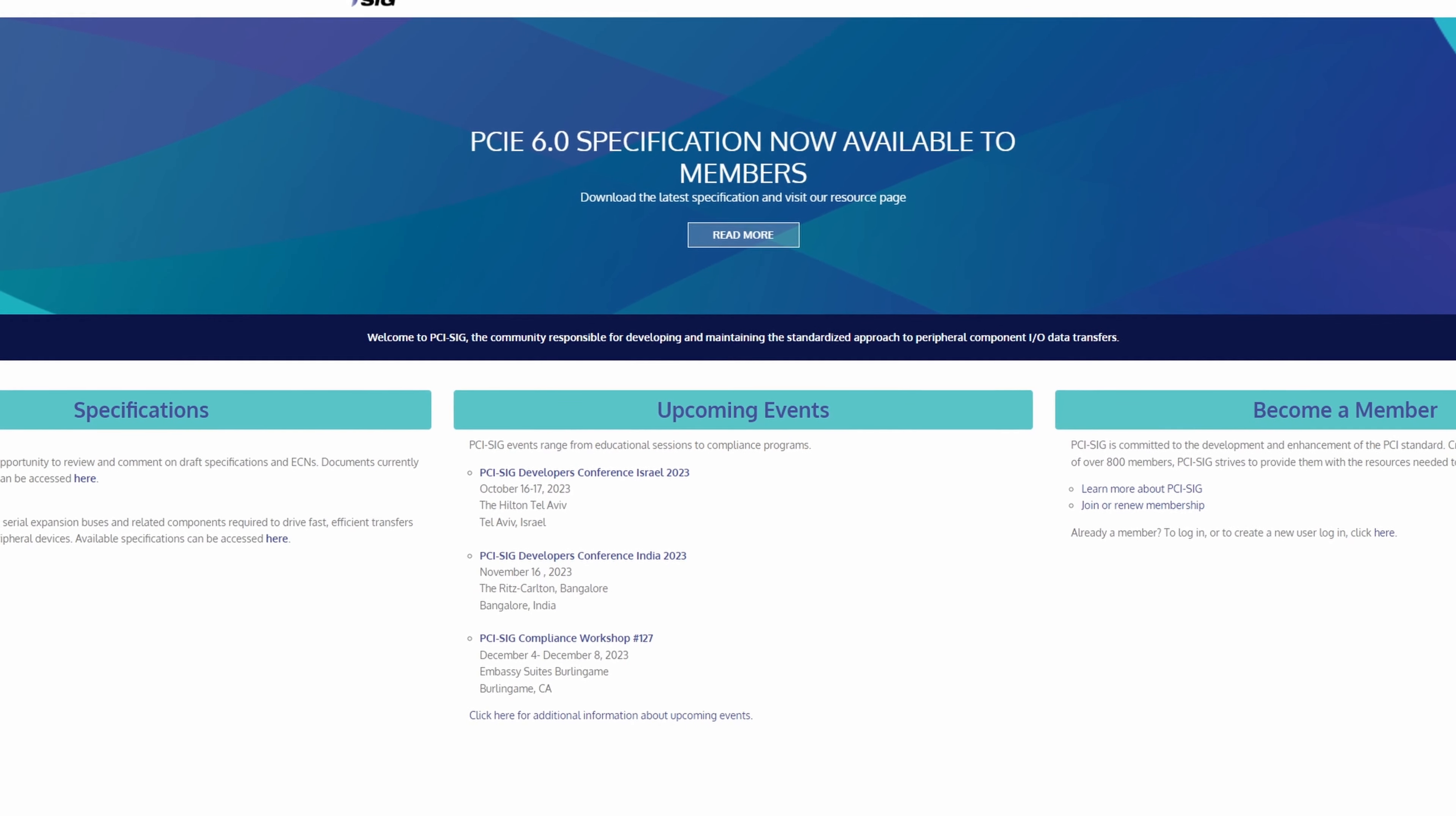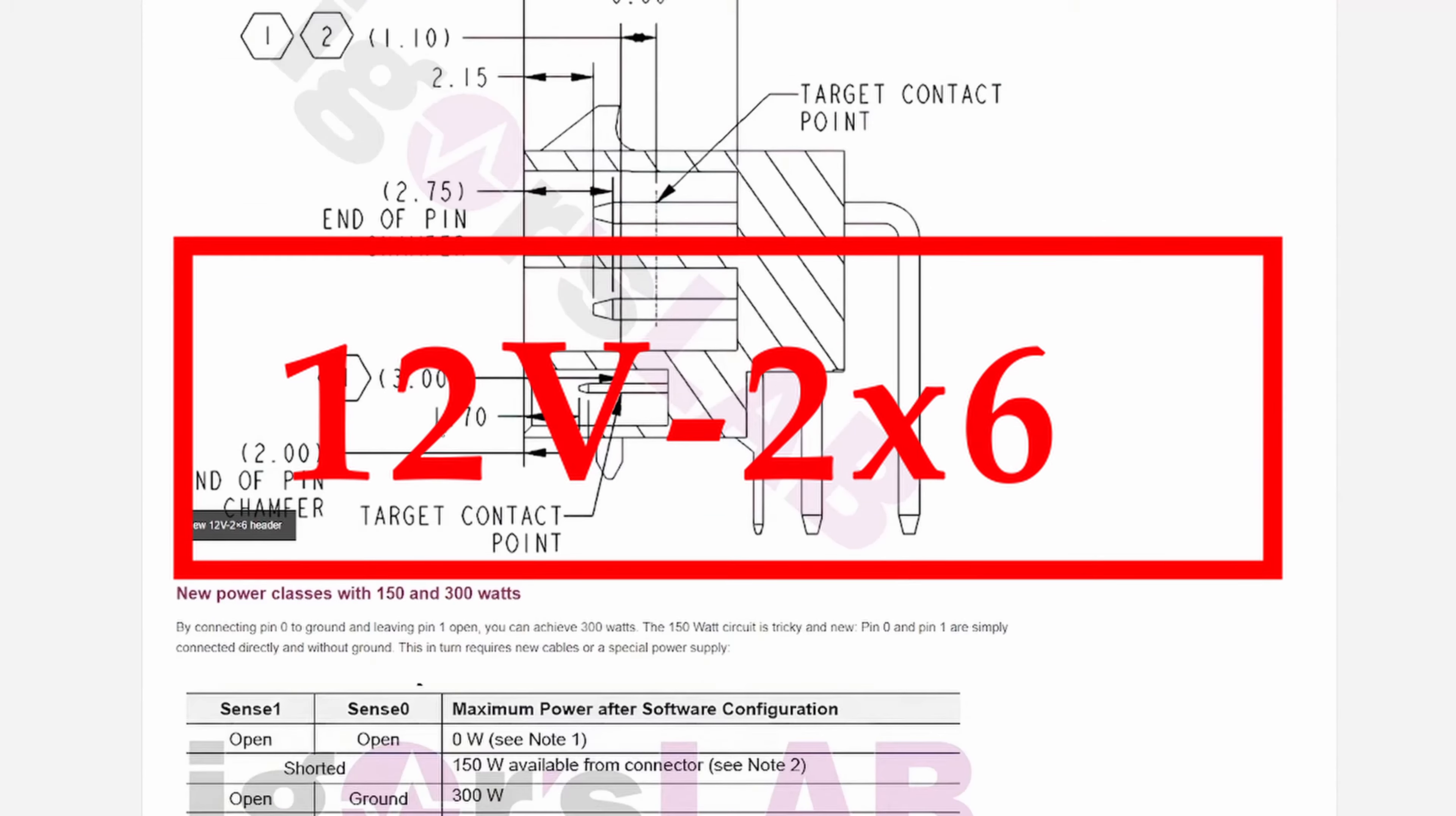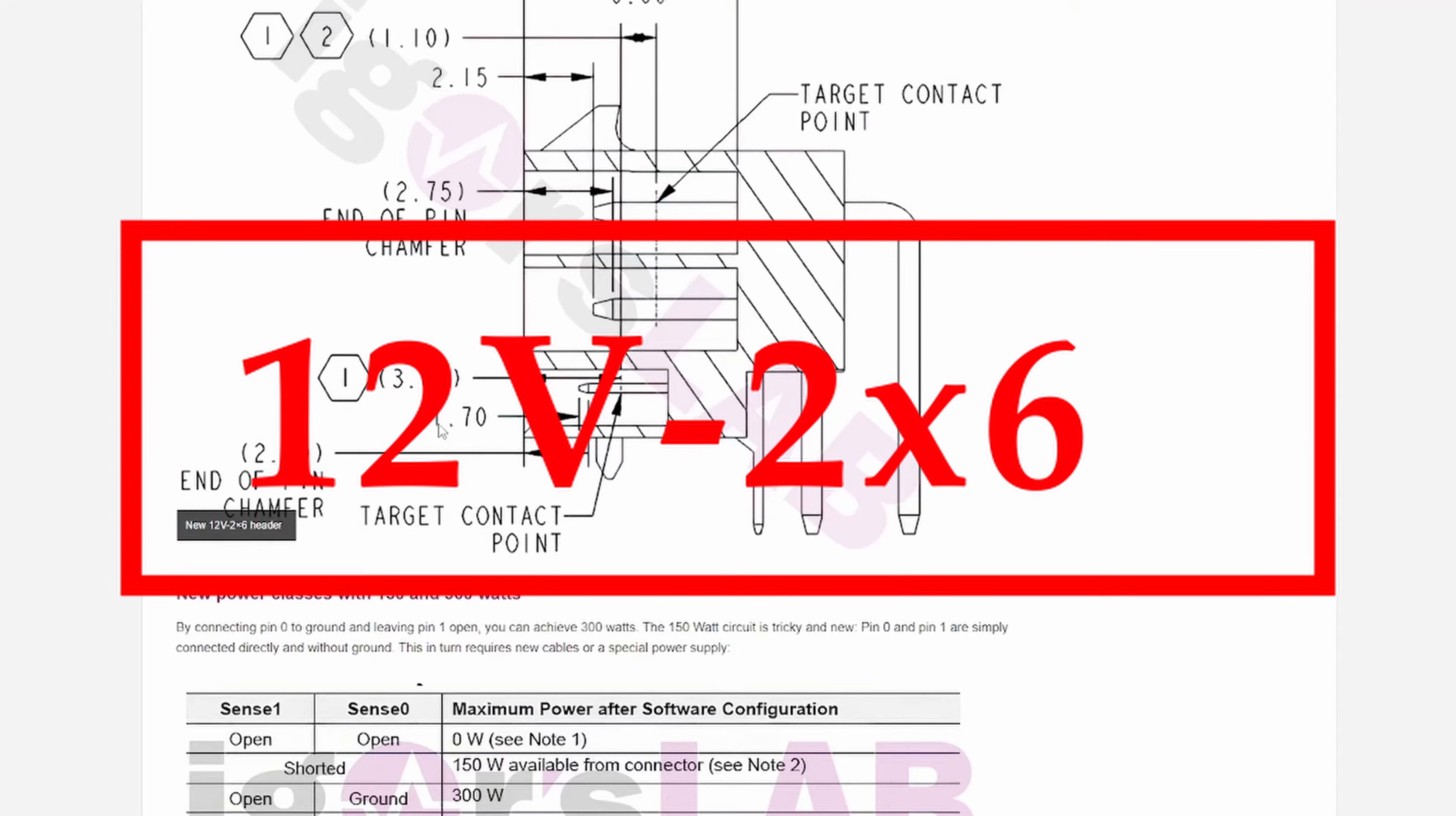In July of this year, the company PCI-SIG, who designs the connector itself, actually released an updated version of the connector that they called 12V-2x6, which was something that people were kind of unsure of if they were going to implement on the current generation of video cards.